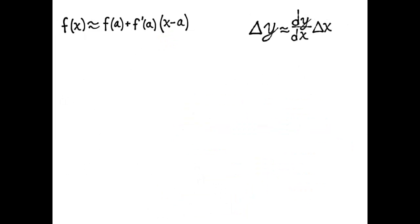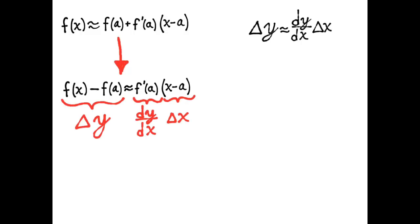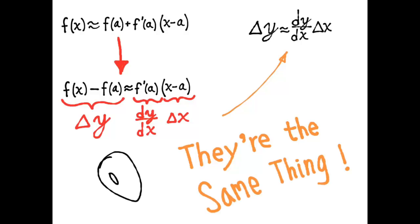And if you think those two equations are two different equations, well, subtract f(a) from both sides of this one, and then you'll notice that if you simply use a different notation to designate each of the parts of that equation, those two equations are really the same equation. So it's not two separate ideas or two separate subjects. It's all linearization. It's the same idea. The more you work with it and understand it, the more you'll understand it to be the same thing.